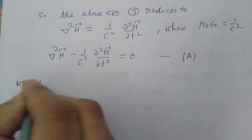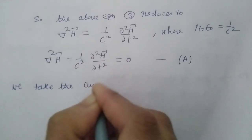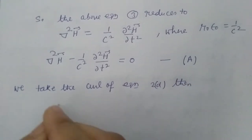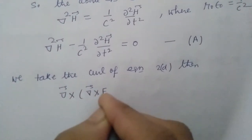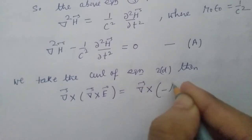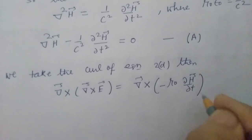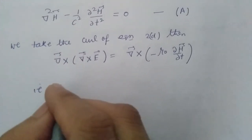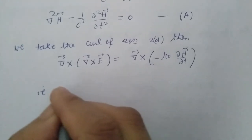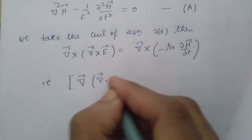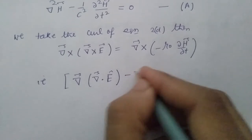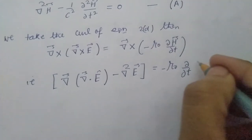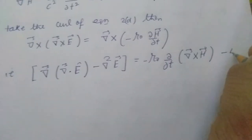Now we take the curl of equation 2d, then curl of curl of E equal to curl of minus mu naught ∂H/∂t. Again using the above vector identity A cross (B cross C) equal to B(A dot C) minus (A dot B)C, we have gradient of (divergence E) minus del squared E equal to minus mu naught ∂/∂t of (curl of H). This is equation number 4.